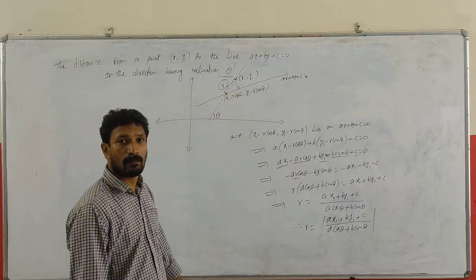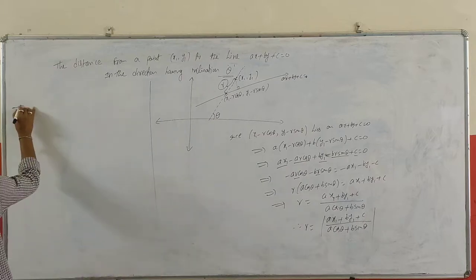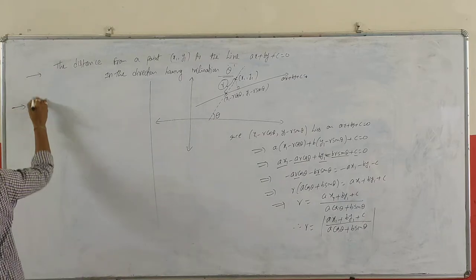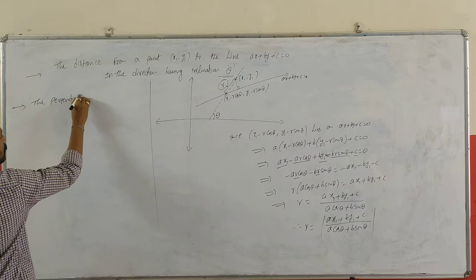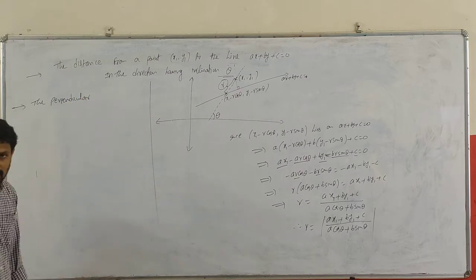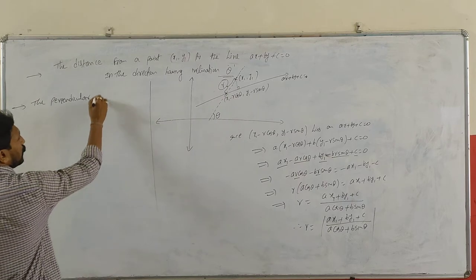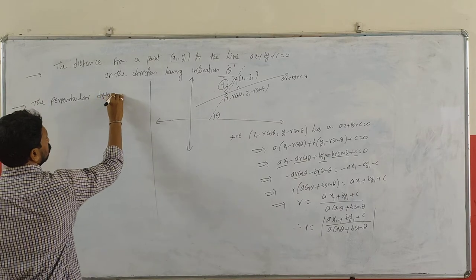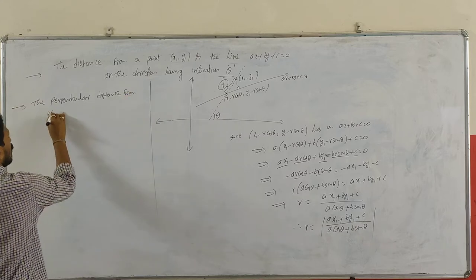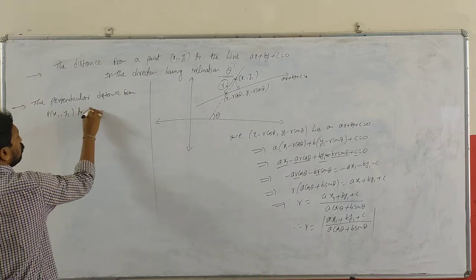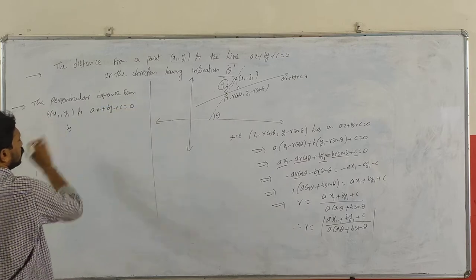Now, if you want to find the perpendicular distance — the next concept — the perpendicular distance from P(x1, y1) to Ax + By + C = 0. If no direction is mentioned, it is always perpendicular distance.